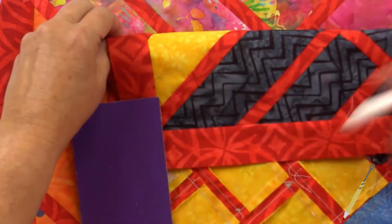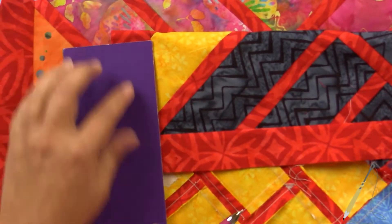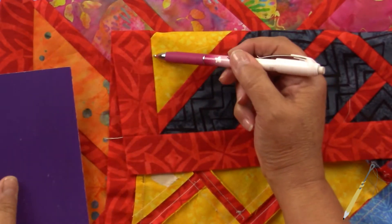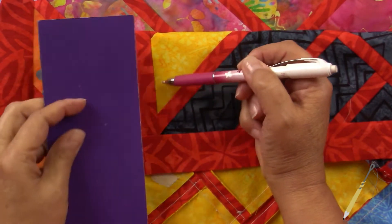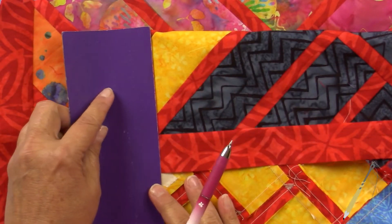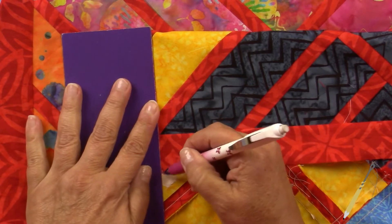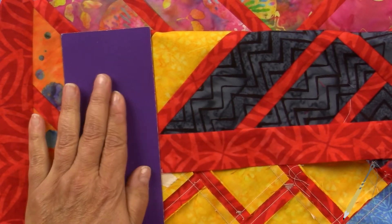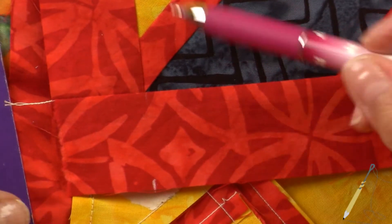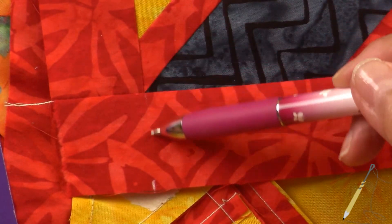I'm going to place my straight edge along this same line of this sashing and just carry it on, and I'm going to put a little mark that would be in the seam allowance. So here is our line from here down to here.